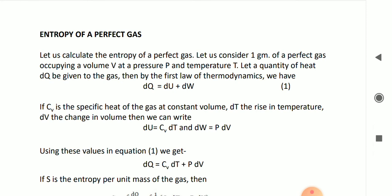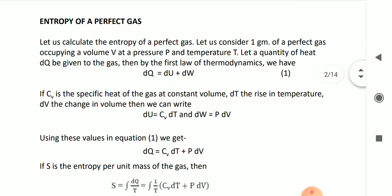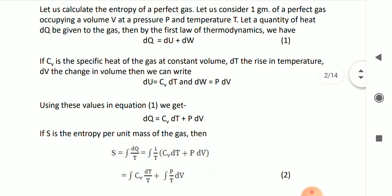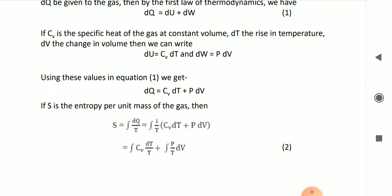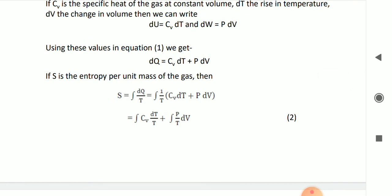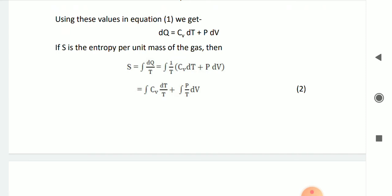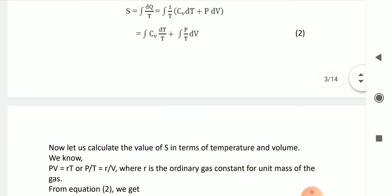Suppose we take one gram of perfect gas with volume V, pressure P, and temperature T. We can say that dq equals dU plus dW, which is the first law. But we know that internal energy dU equals cV dT and W is pdV. So dq equals cV dT plus pdV. If entropy equals S, then I will divide and integrate this equation, giving dq upon T equals cV dT upon T plus p dV upon T.